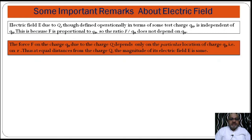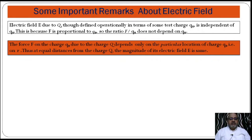Electric field depends upon the location of the point. If the point is closer to the source charge, electric field intensity will be high. If the point is far from the source charge, electric field intensity at that point will be lower. We keep the test charge minimum — vanishingly small, approaching zero — so that it does not alter the field of the source charge. That is the idea.